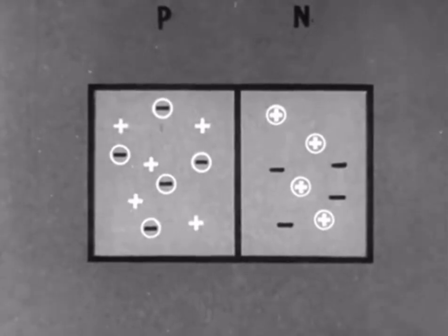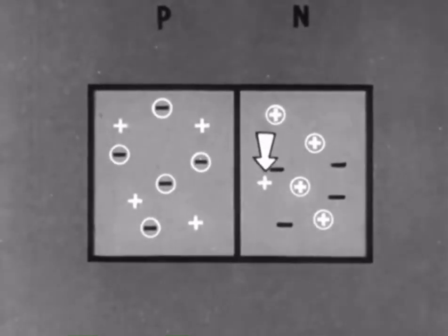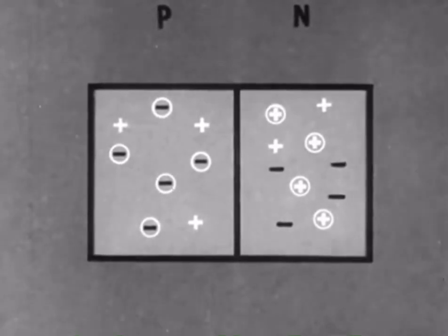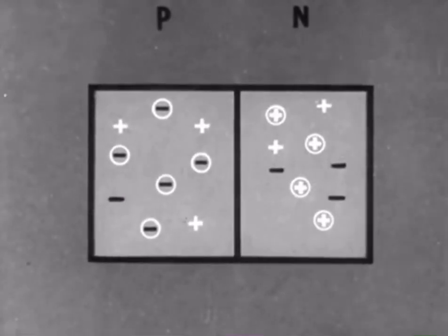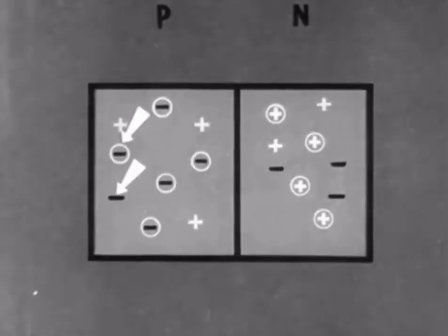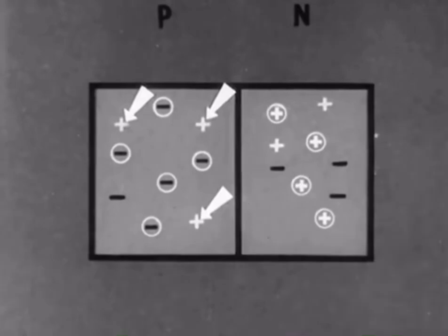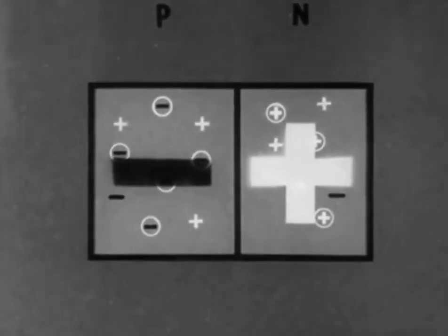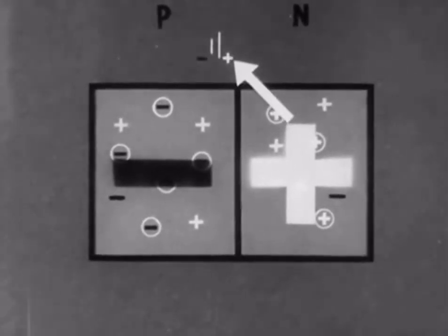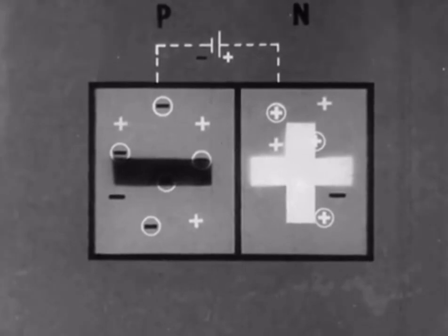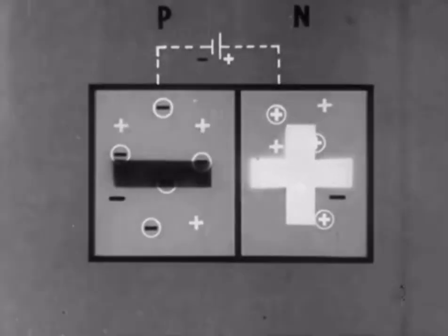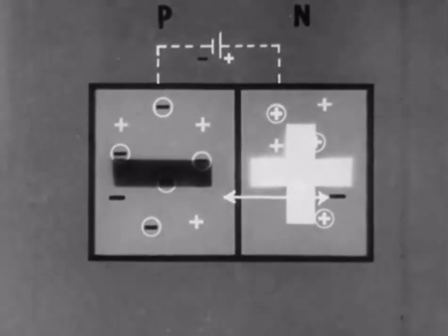Now let us consider what happens when we join the two pieces together. Some of the positive carriers will drift into the n-type germanium. Similarly, some of the negative carriers will drift into the p-type. If we now count up the positive and negative charges, we see that in the p-type, there are more negative charges than there are positive charges, so the material has become negatively charged. In the same way, the n-type material has become positively charged. We can represent this state of affairs by an imaginary battery connected like this with a negative pole to the p-type germanium. Because of the electric field existing between the two pieces of germanium, more positive carriers are prevented from entering the positively charged n-type germanium. Like charges repel, remember. And similarly, more negative charges are prevented from entering the negatively charged p-type germanium.